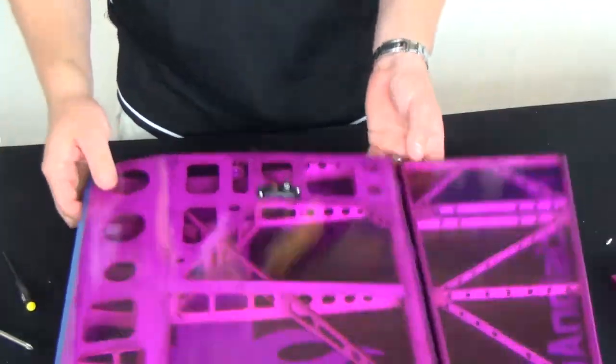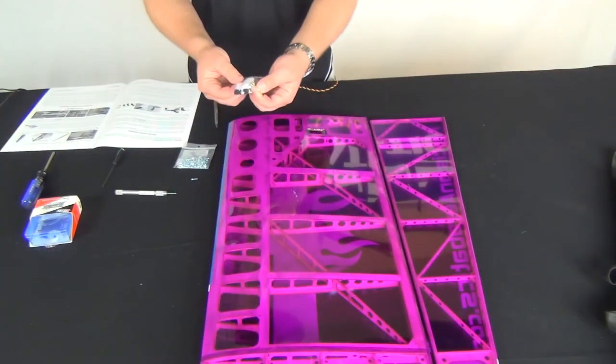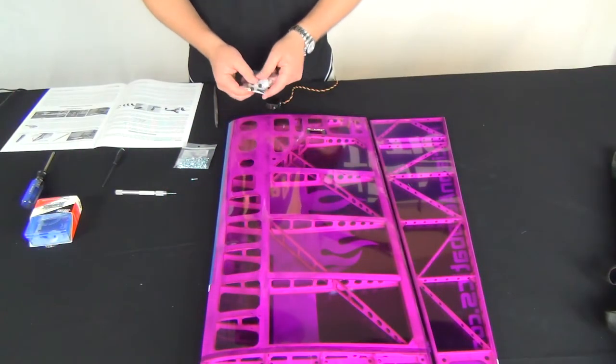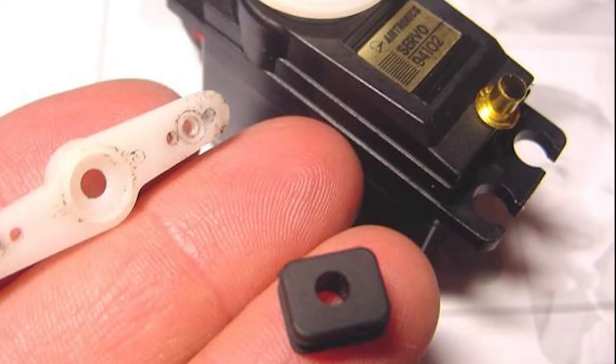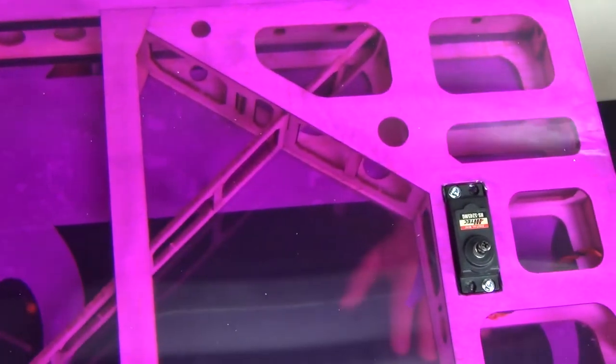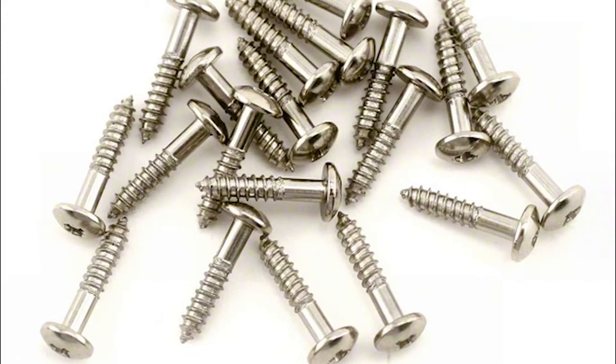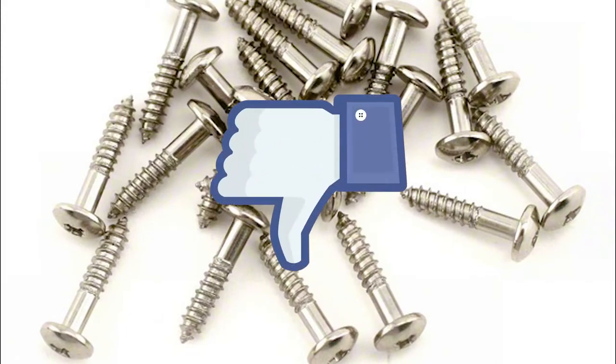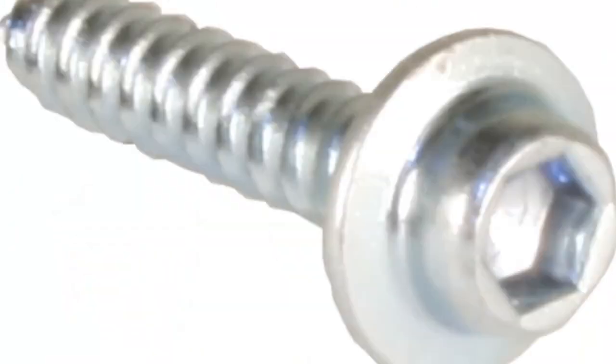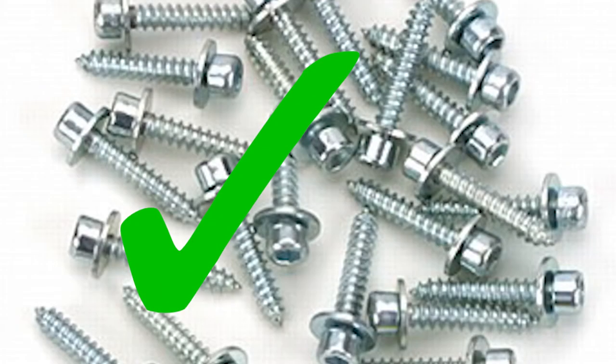But first we need to install our servos. And to do this, we should start by discarding the hardware that was supplied with them. The rubber grommet arrangement just permits too much flex under the load, so our servos will be hard mounted into the fuselage. Now typically the screws that are provided aren't fully threaded anyways, so these are useless to us. You'll need to source your own hardware. I like to use the type of screws that are fully threaded and have washers formed into the head.